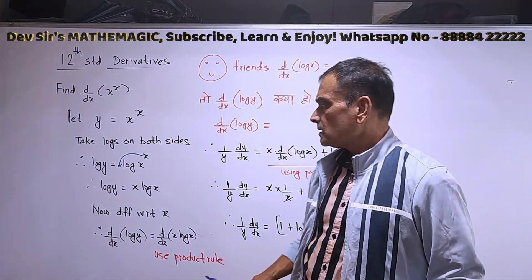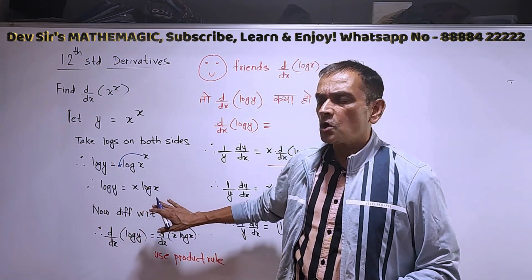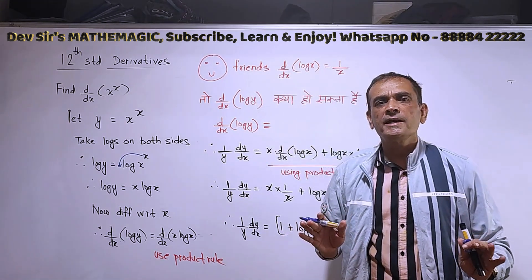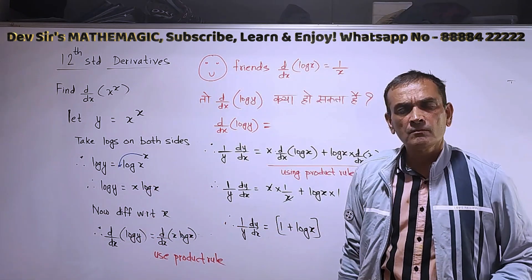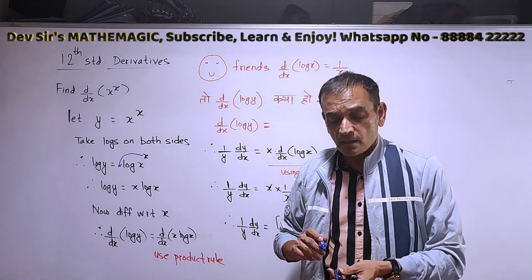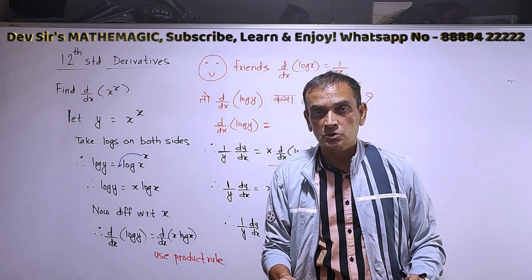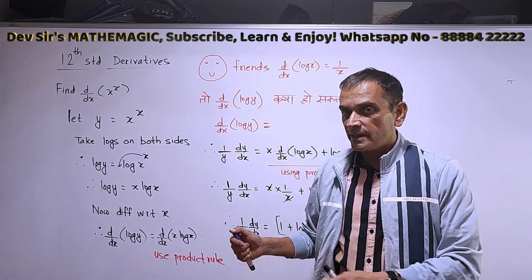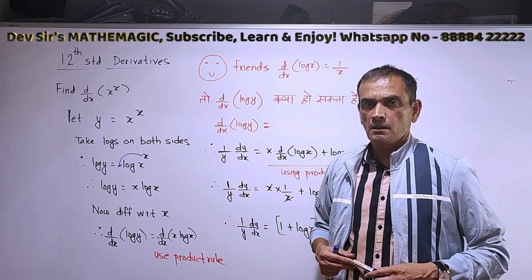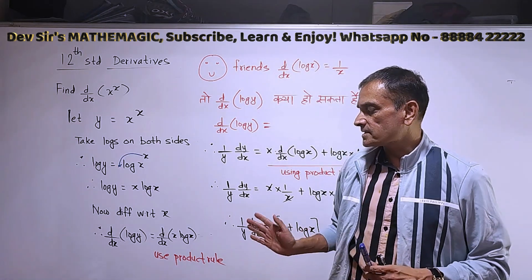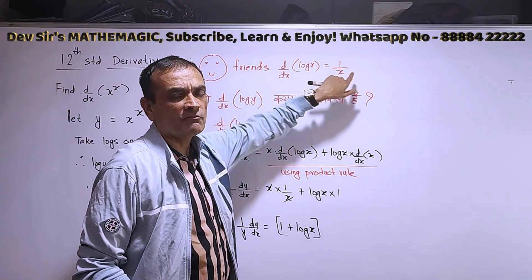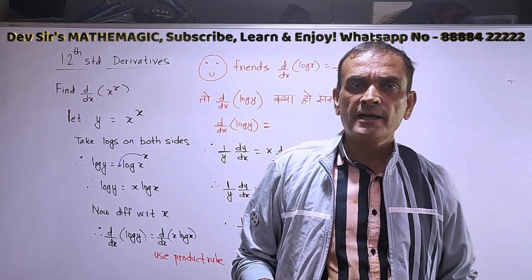Now after using rules of logs, differentiate with respect to x — that means d by dx on both sides. d by dx of x log x means it is x into log x, which requires the product rule. On the left-hand side, d by dx of log y. Now comes one important thing: d by dx of log x we know — derivative of log x is 1 upon x.